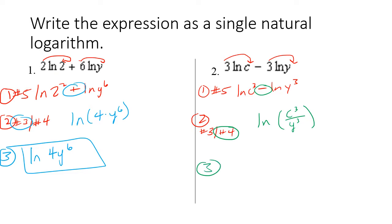Step three is to simplify — simplify means using the least number of characters. So I can simplify this even more by writing the natural log of (c/y) to the third — one fewer character.